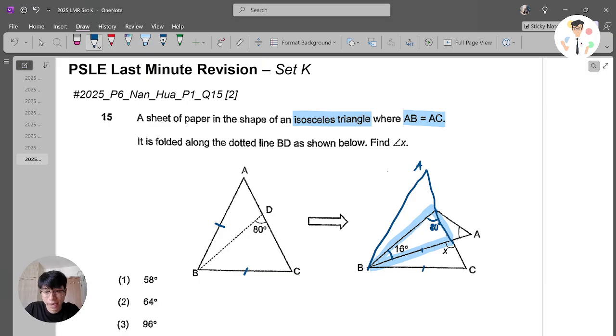So what is the angle here? Angle here will be 180 minus 16 minus 80. It will give you 84. And if I want to find X here, there is actually a straight line. If it's a straight line, 180, I just need to minus 84.